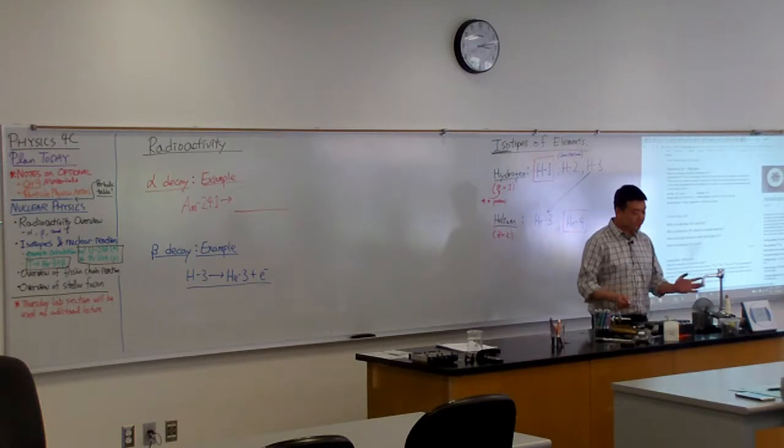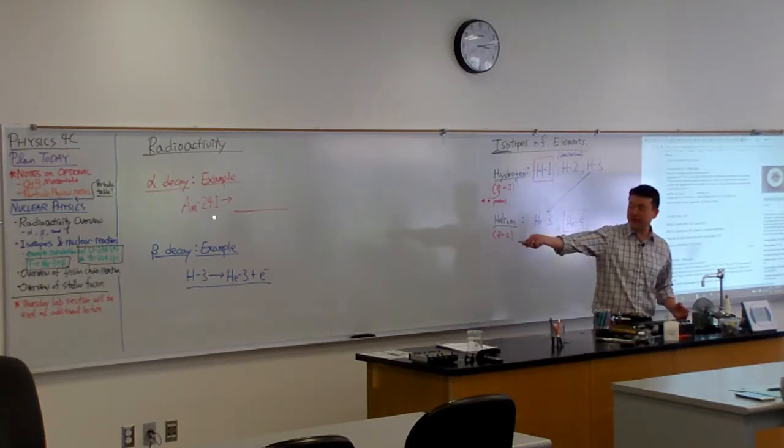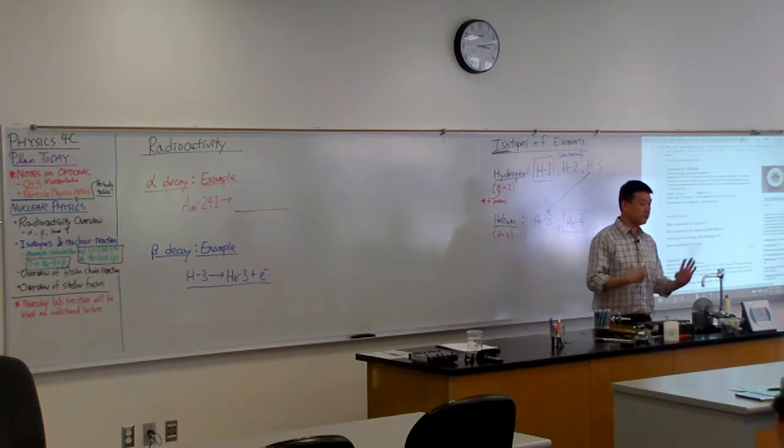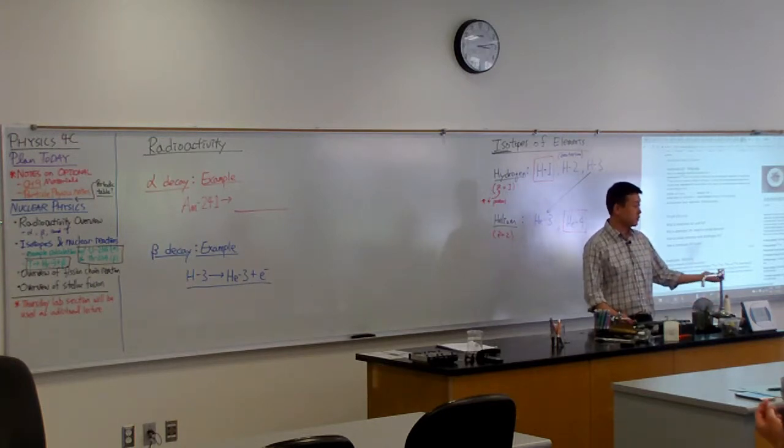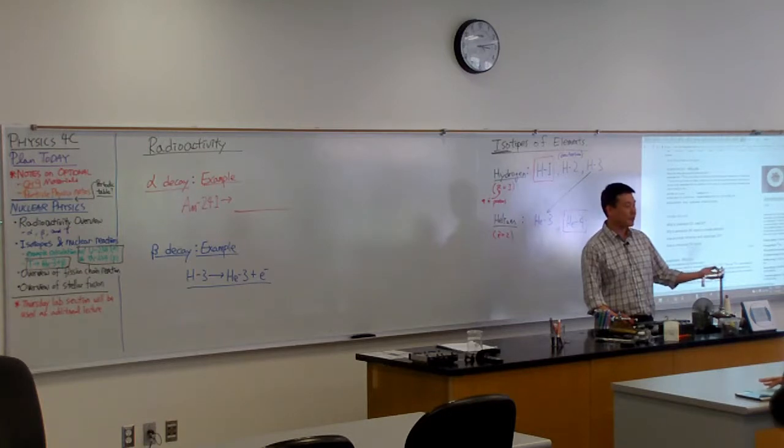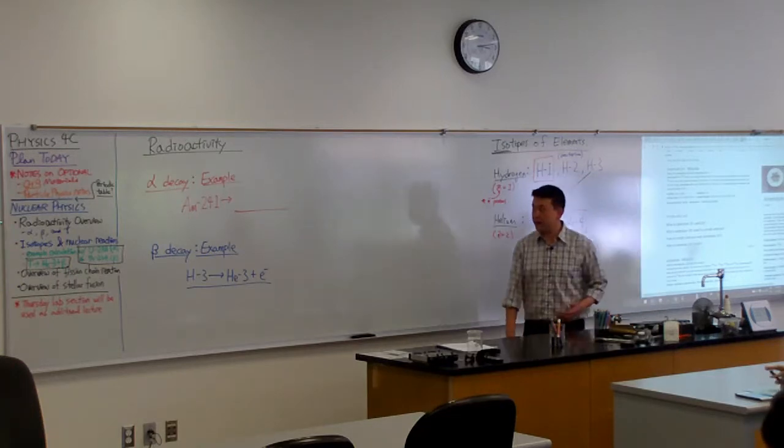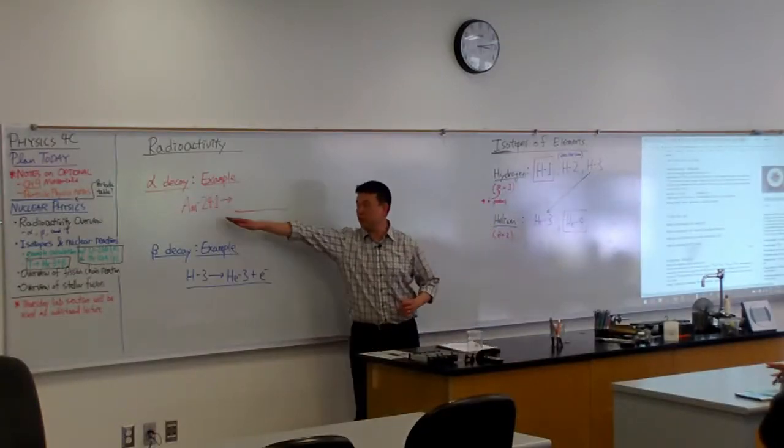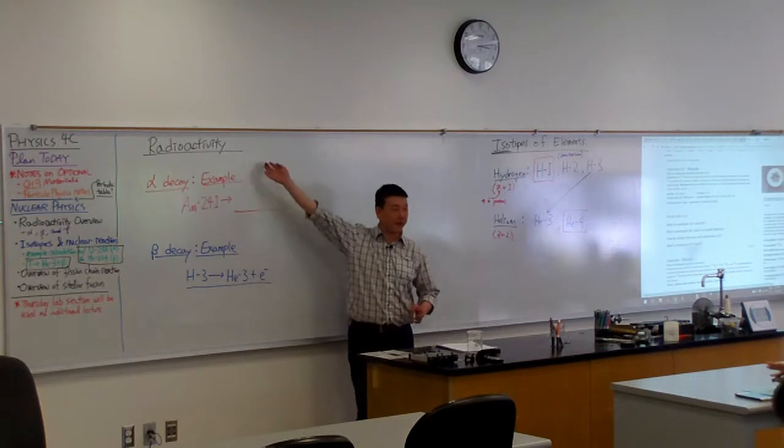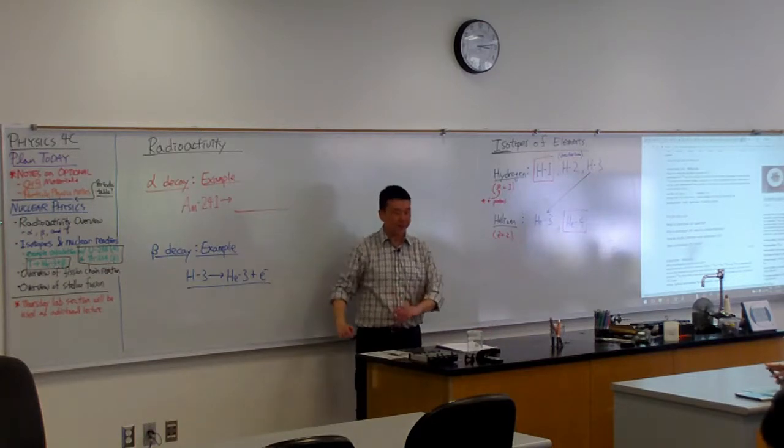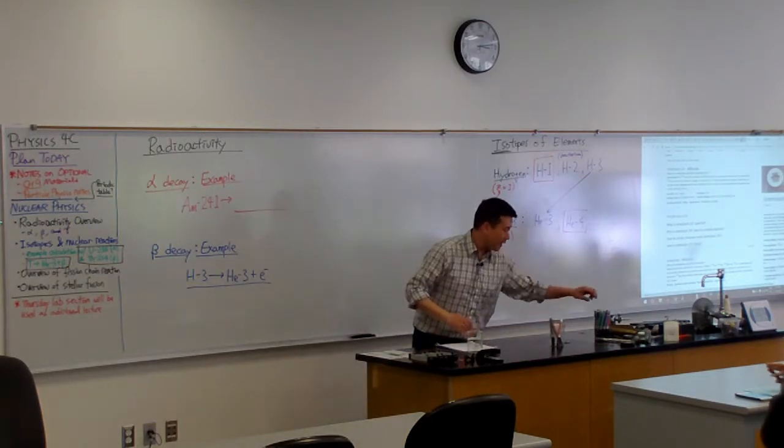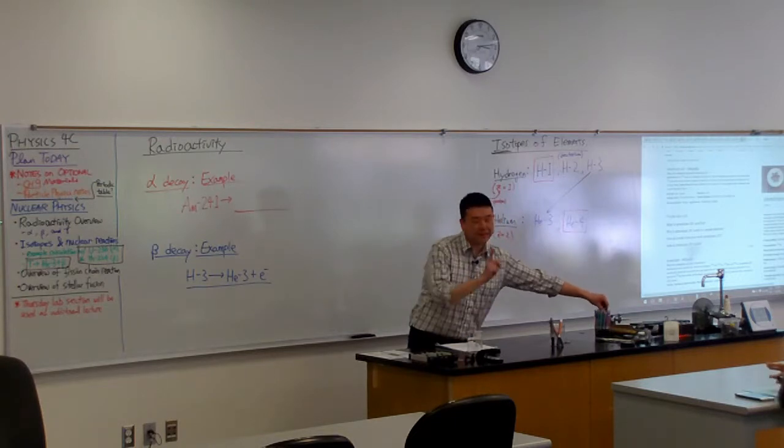So the first question you could ask is, what does it decay into? Because we still hold to the conservation principles. We don't want to just say I had Americium 241, it all goes to alpha particle, and then it's all gone. That's not how it happens. So I guess this is how you can look at it. I think I can tell you this. There's a conservation law of nucleons.